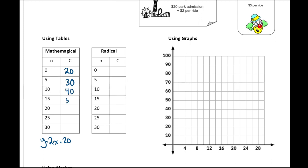Continuing the Math Magical World table: at 10 rides it's $40, 15 rides is $50, 20 rides is $60, 25 rides is $70, and 30 rides is $80.